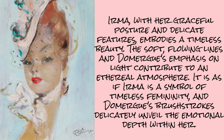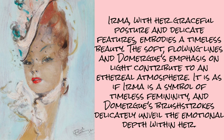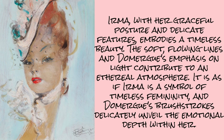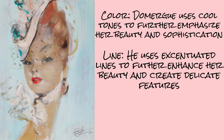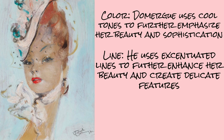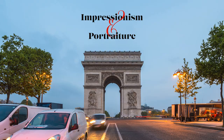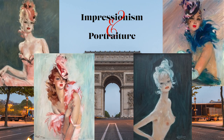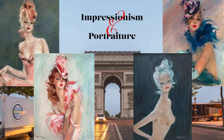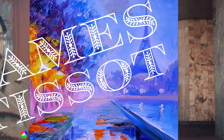Now let's look at Urma by Jean-Gabriel D'Omergues. Urma, with her graceful posture and delicate features, embodies a timeless beauty. The soft flowing lines and D'Omergues' emphasis on light contribute to an ethereal atmosphere. D'Omergues uses cool tones to emphasize her beauty and sophistication, accentuated lines to enhance her delicate features, and elongated proportions to create balance and a sophisticated image. D'Omergues uses Impressionism in his portraits to enhance their beauty and personality, and as you can see, their personalities shine through as if they are going to come out of the canvas.